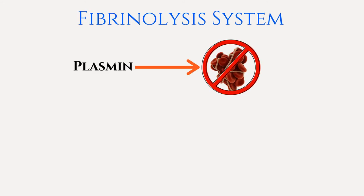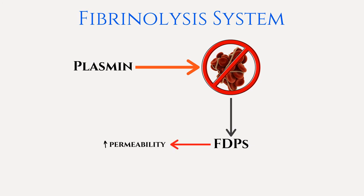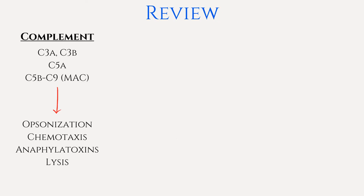The fibrinolysis system acts as a checks and balances system, acting in opposition to the coagulation system to prevent problems. The main inflammatory mediator here is plasmin, which breaks down fibrin clots. It also plays a part in the complement enzyme cascade. When the clot is broken down, it results in fibrin degradation products, also known as FDPs, which leads to increased vascular permeability and therefore contributes to edema.